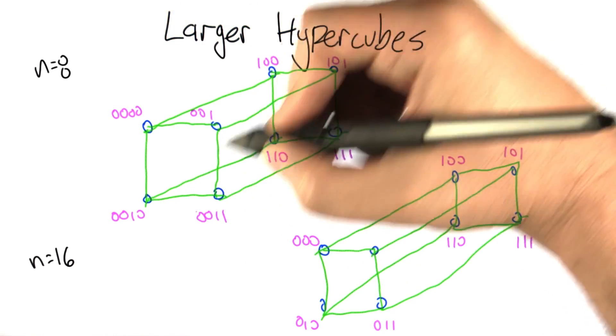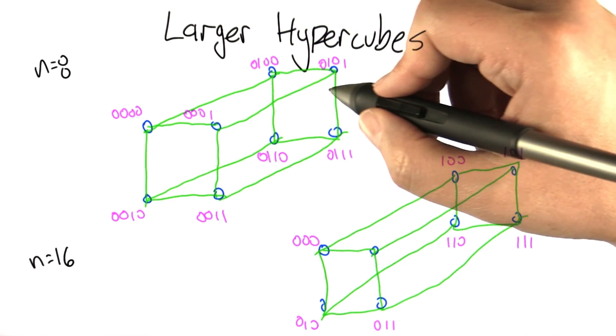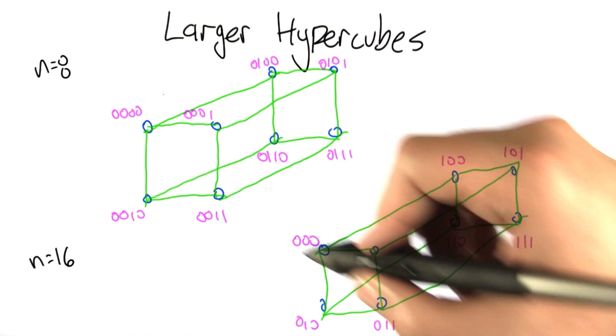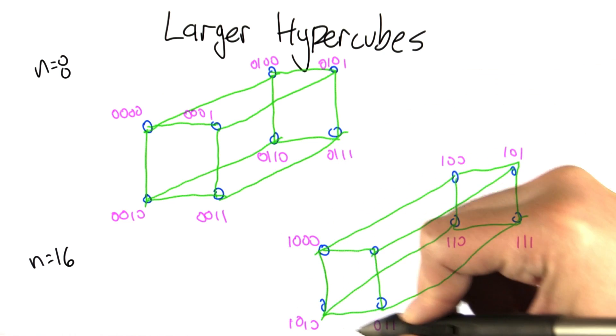Everybody in this hypercube is going to get a 0 out in front. Remember, what that means in terms of the binary numbers is that they stay the same. A leading 0 doesn't change anything. But this second hypercube, everyone's going to get a 1 out in front.